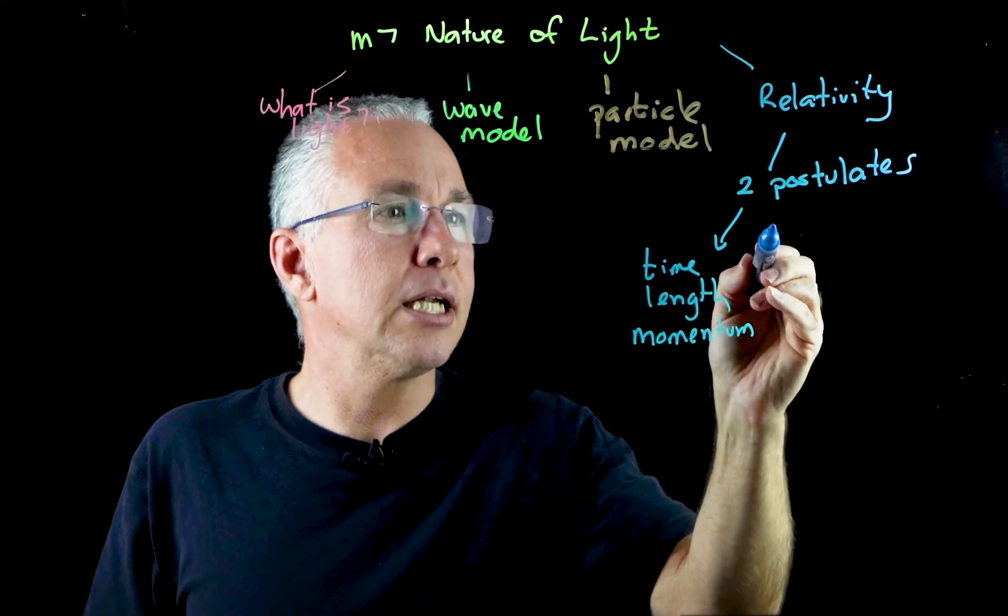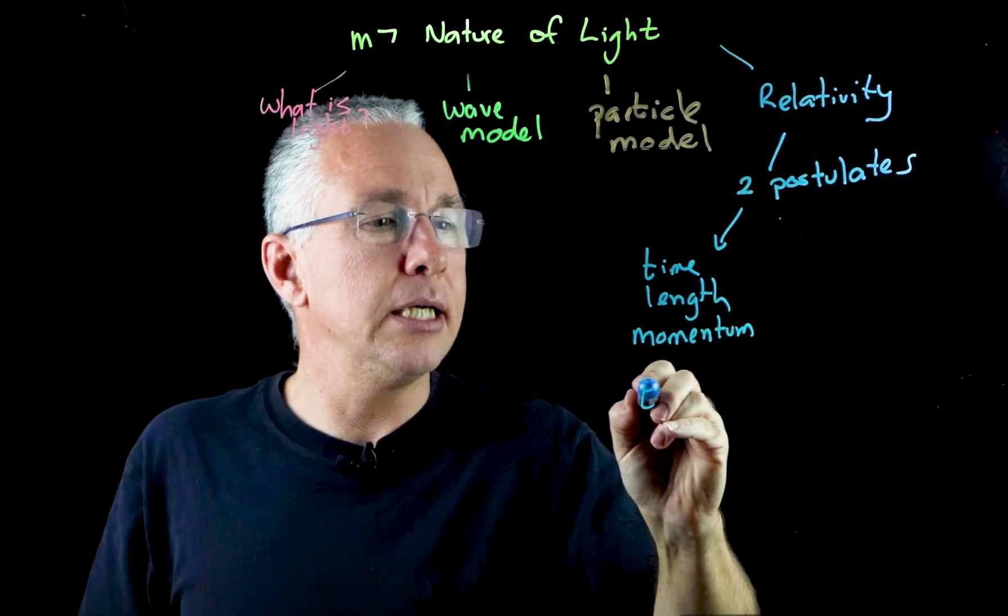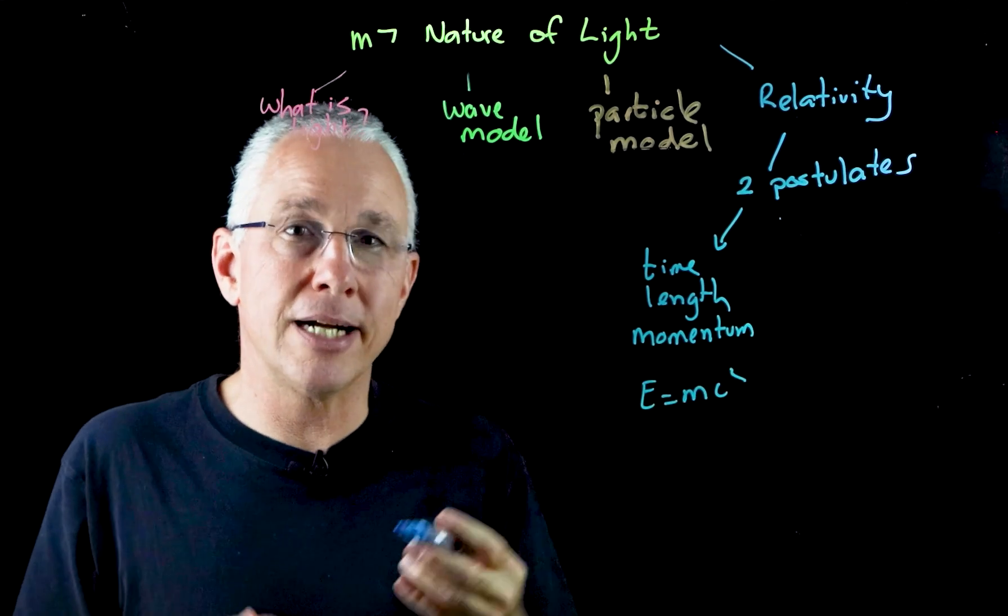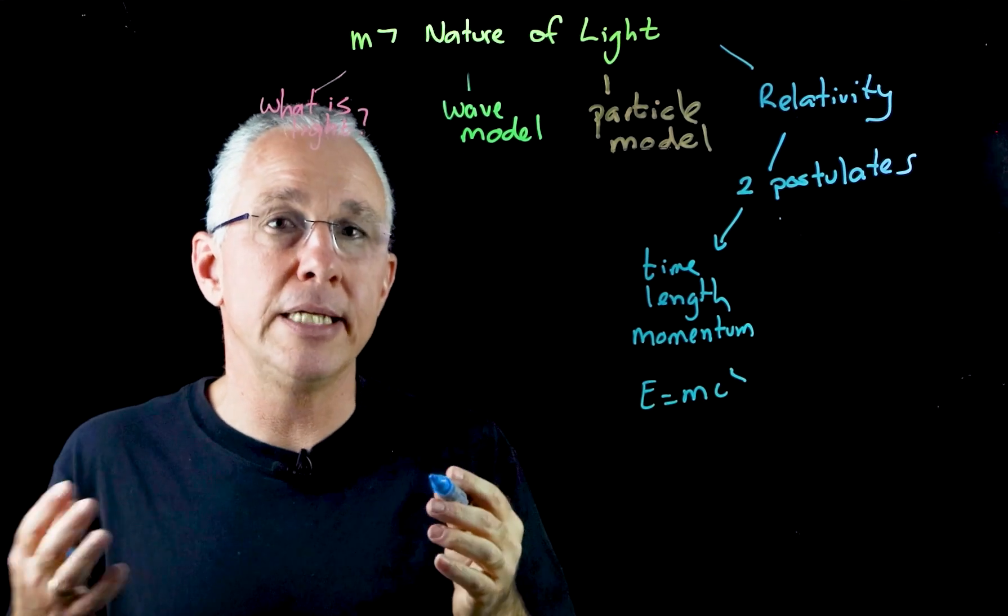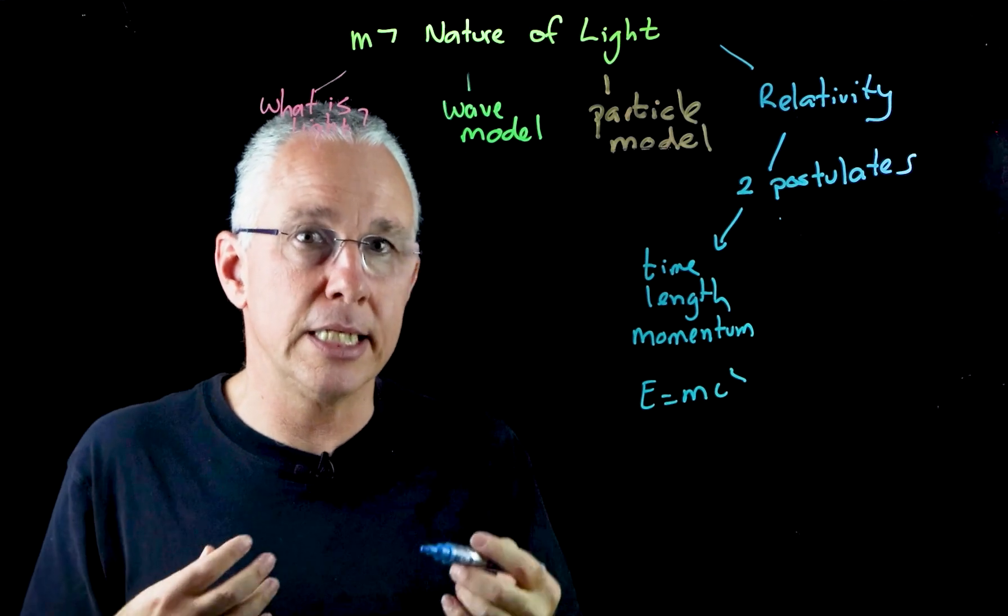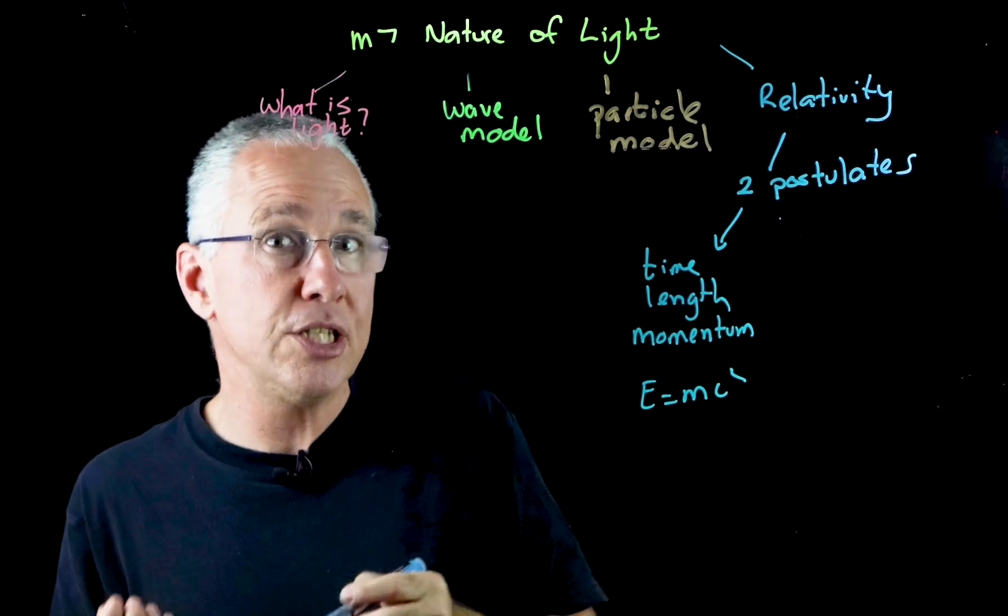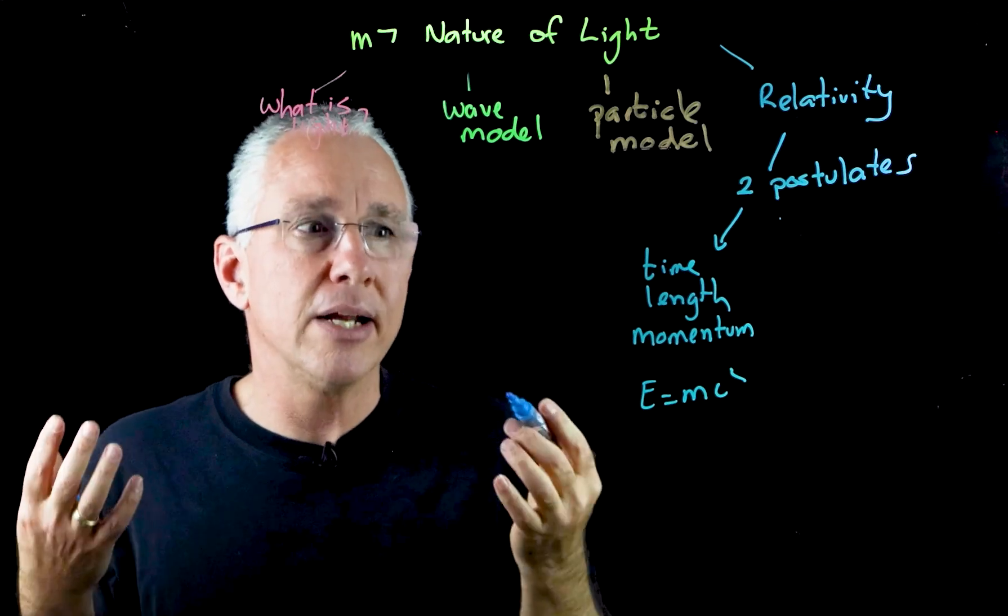Another particular consequence out of that comes E equals MC squared. In other words that energy and matter are in essence the same thing. They can be interchanged where the constant of proportionality is C squared. So in other words energy can turn into mass and mass can turn into energy because basically in essence they are equivalent.